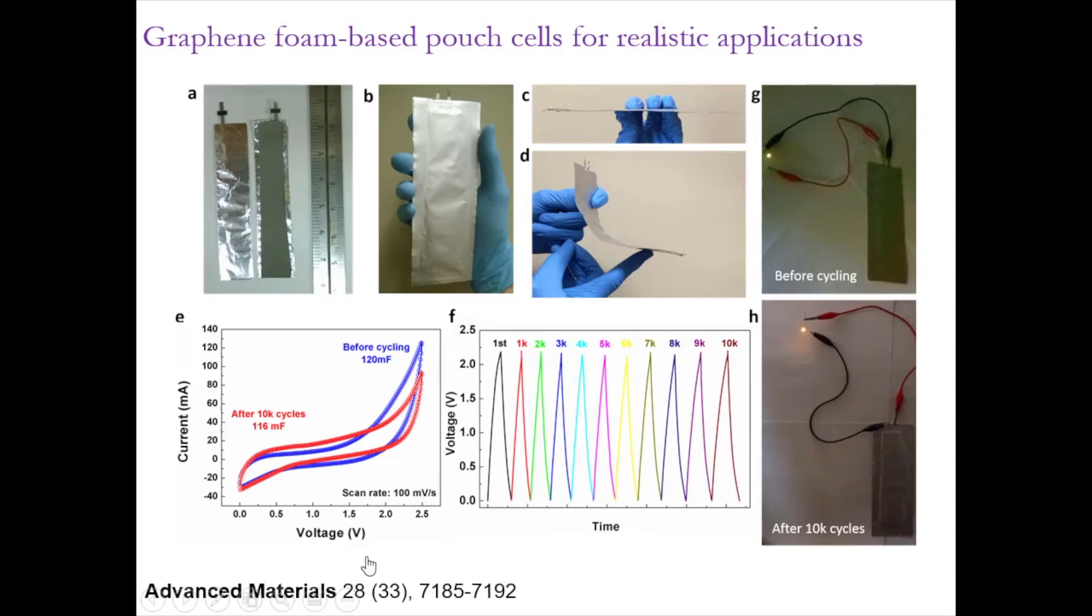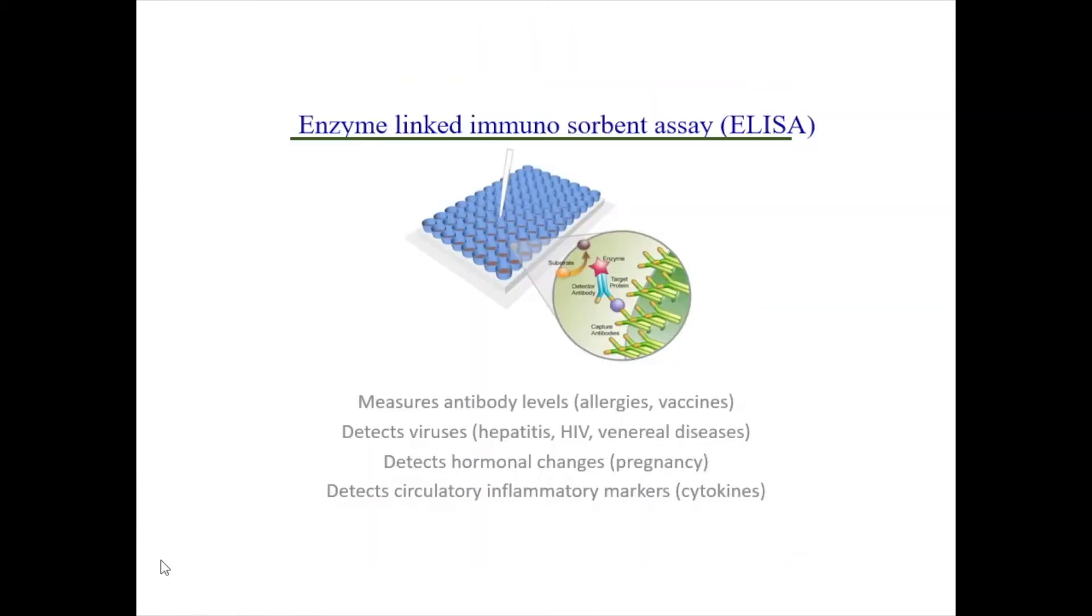And we were able to run it to 10,000 cycles without any significant deterioration in the performance. It goes from 120 mF to 116 mF. And all this work is published in Advanced Materials. So now, switching gears, like I showed in the beginning, we use these nanomaterials for different applications. And I just talked about how we use that in energy storage. Now, let's look at how we can use that for biosensors to detect diseases like COVID, for example.